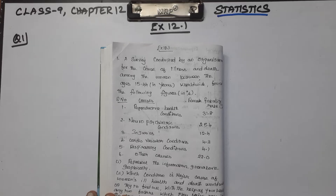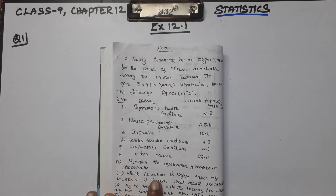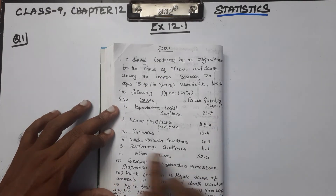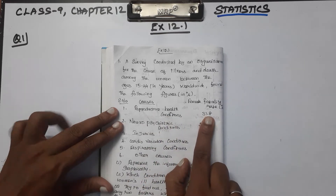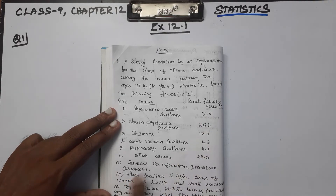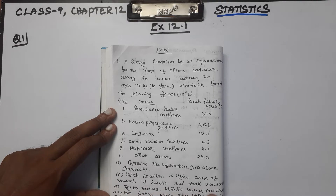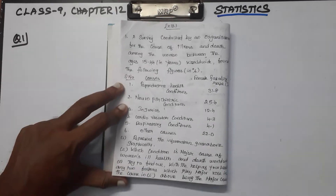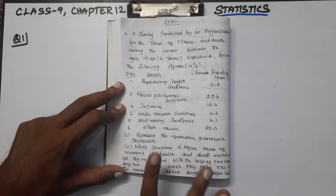So how many questions? Represent the information graphically. When you read the data, you are going to represent it as a graph — what is the situation, which condition is the major cause of women's ill health and death worldwide? If you don't know what the reproductive health condition is, there are illnesses and health issues. The third one is a case study question: try to find out with the help of your teacher any two factors which play a major role in the two major causes above.